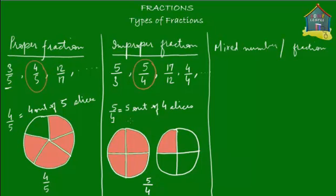The first pizza is represented by the fraction 4 upon 4, because your share is 4 out of a total of 4 slices — the numerator is 4 and there's a total of 4 slices. The colored slice in the second pizza represents 1 upon 4. So together, 4 upon 4 plus 1 upon 4 equals 5 upon 4. We'll talk more about addition and subtraction of fractions in another lesson.